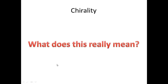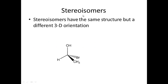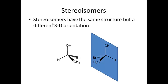For stereo isomers, we talked about molecules having the same structure but different 3D orientation. What do we mean by 3D orientation? Let's look at what an enantiomer is in terms of a stereo isomer. Here's a stereo isomer and here is its mirror image. This carbon has four different substituents around it, it's not symmetrical, and it's sp3 hybridized — here's one, two, three, four substituents.